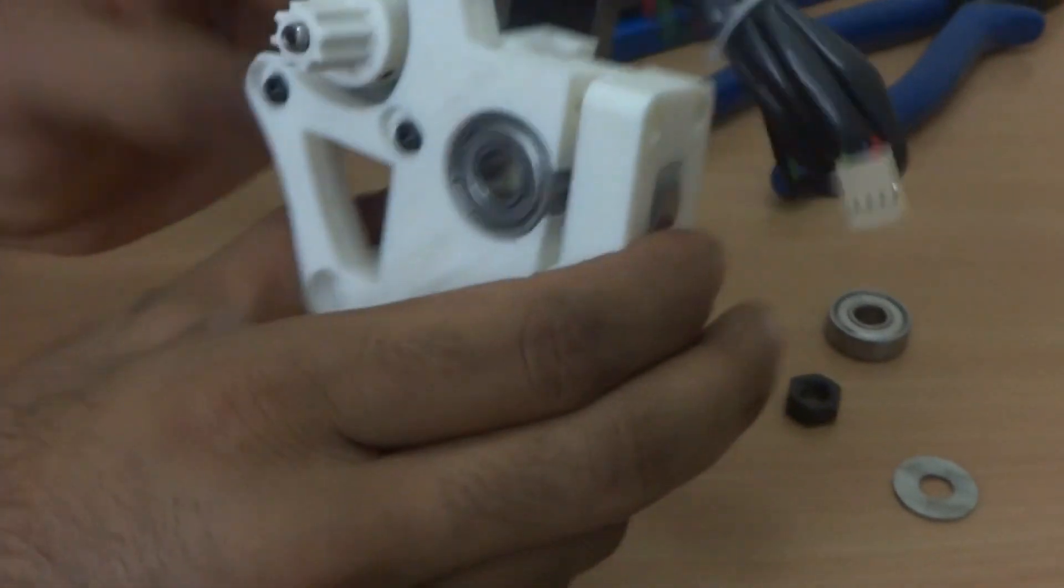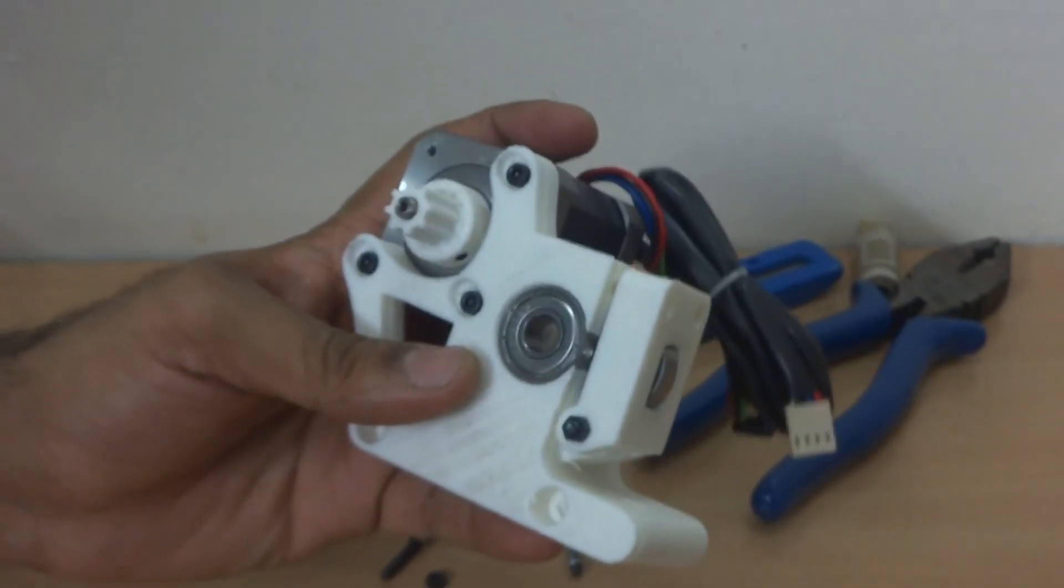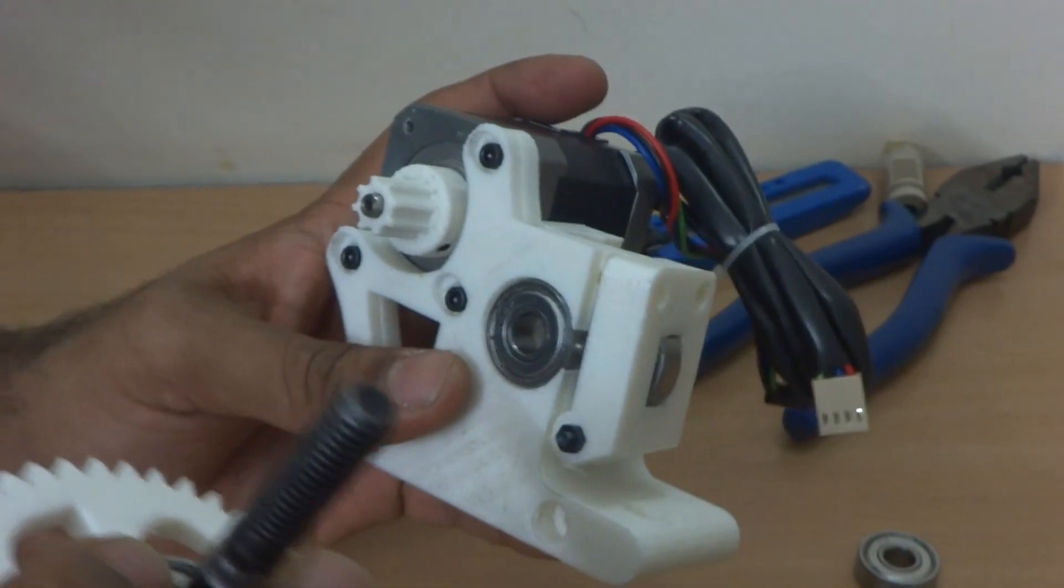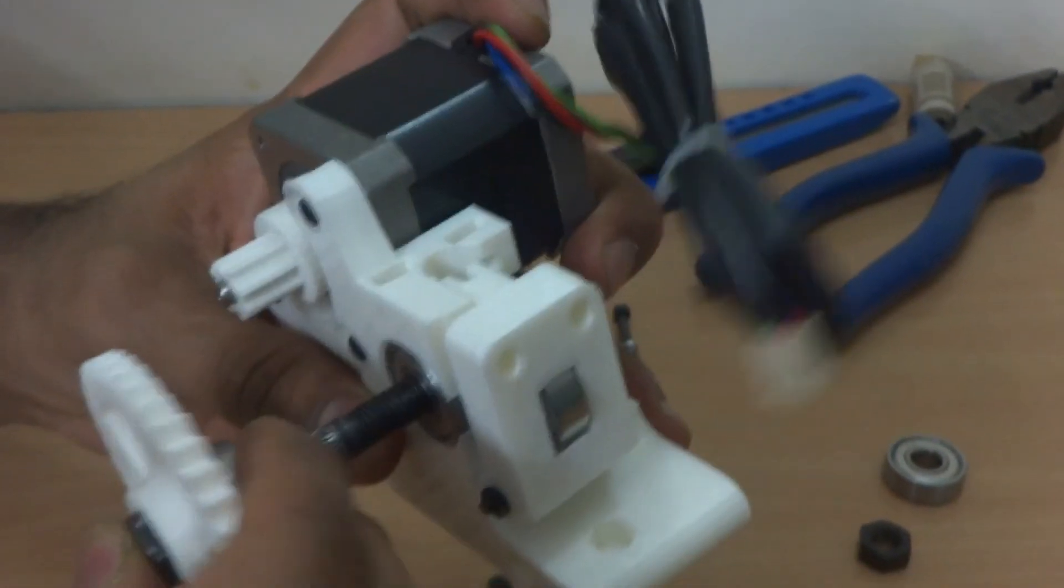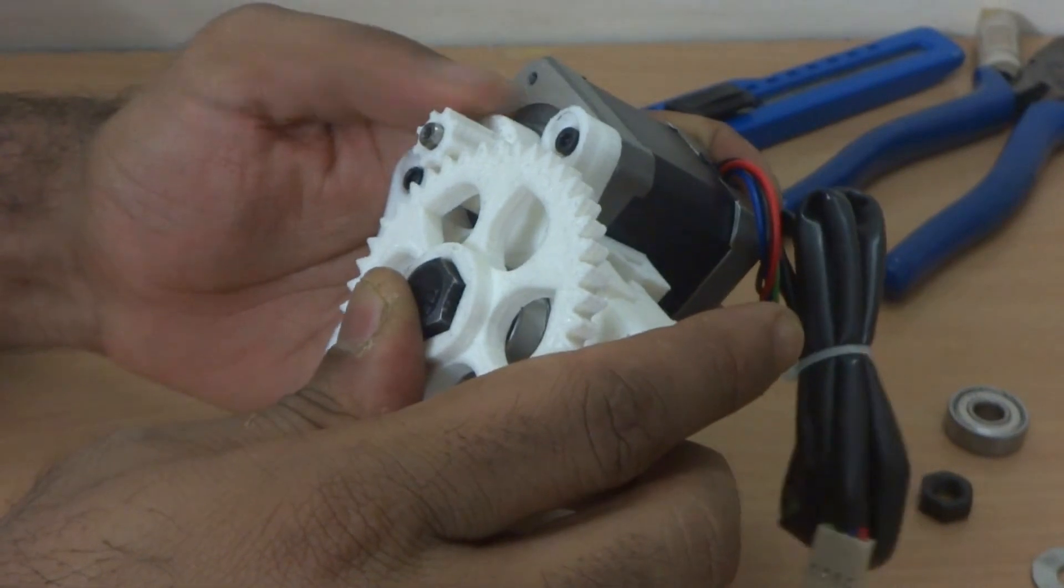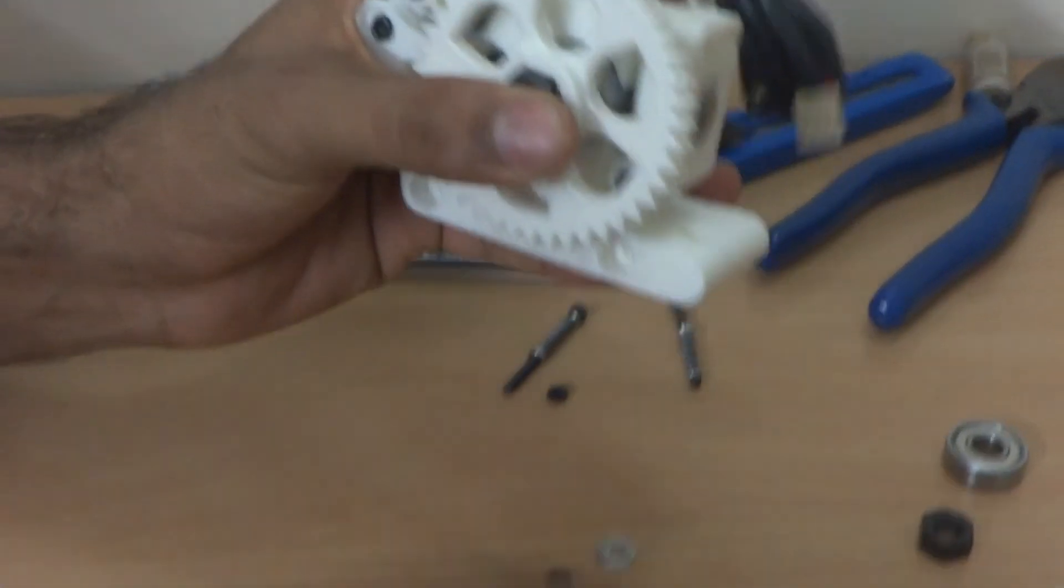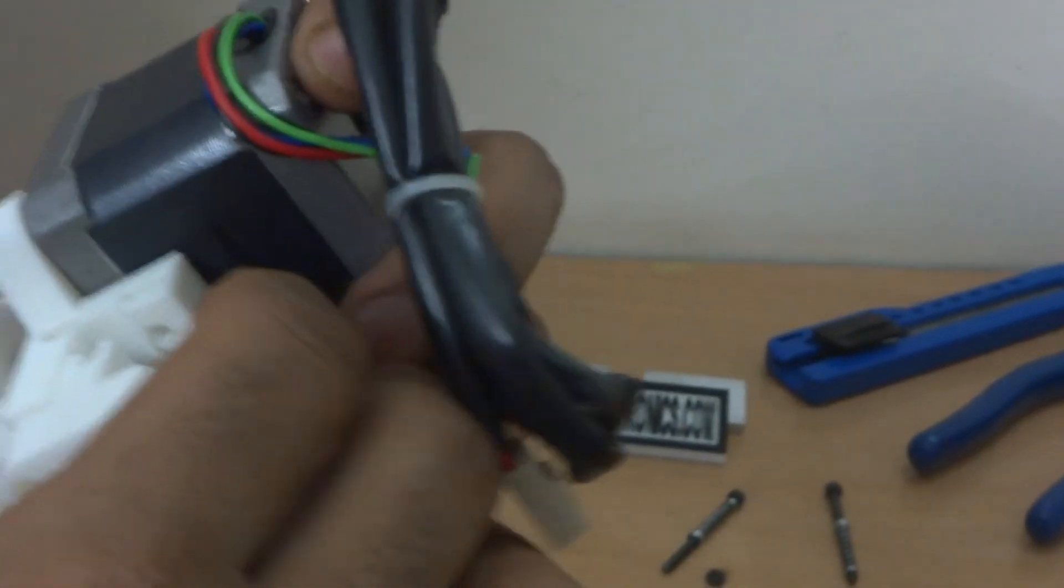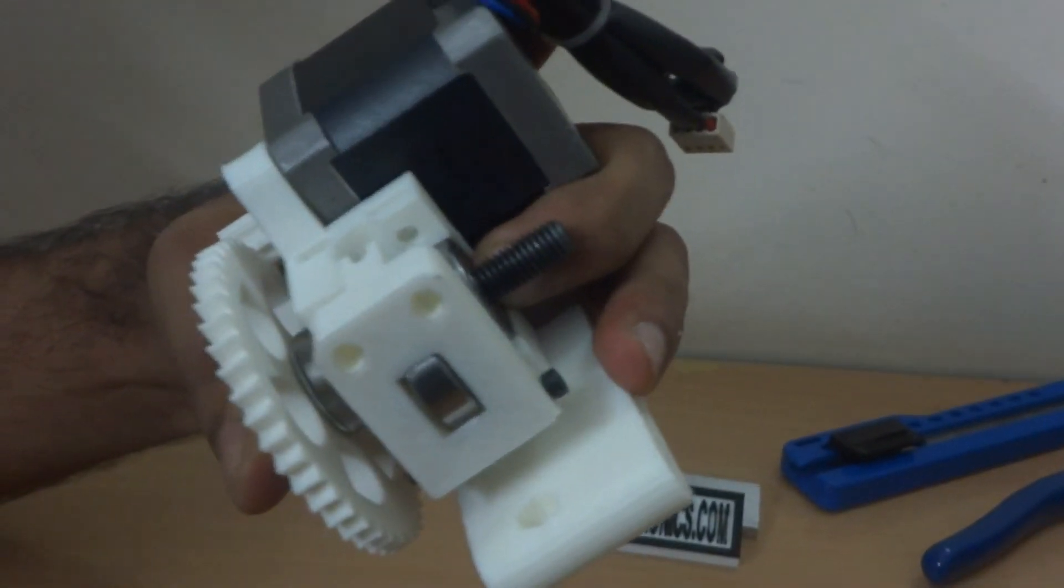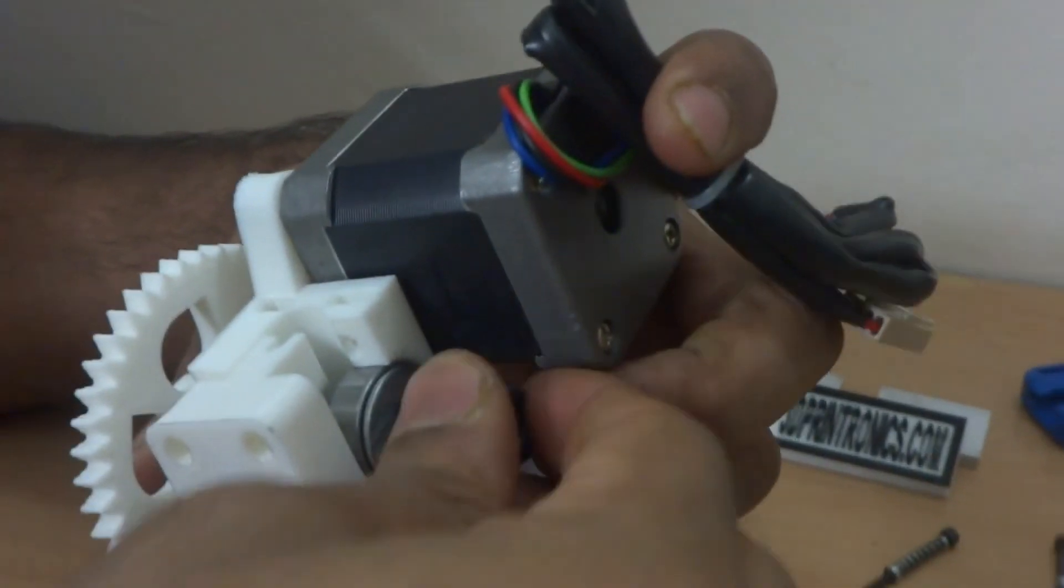So the motor is now installed. Now we can install our hob bolt and the larger gear again in the same manner. You can see the gears are aligned. Just take a bearing, install it like this.